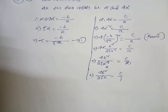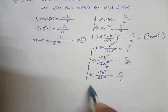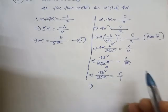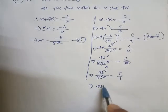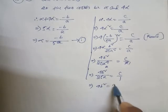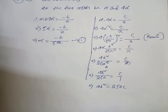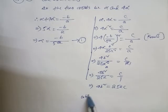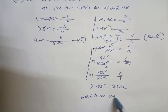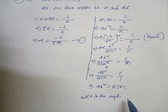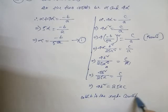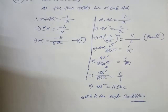After cancellation, four b² by 25a equals c by 1. Going for cross multiplication: four b² equals 25ac. This is the required condition — the answer to question number 5 Roman 6.